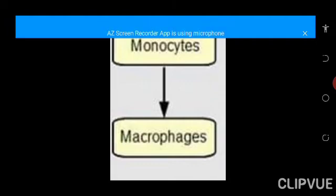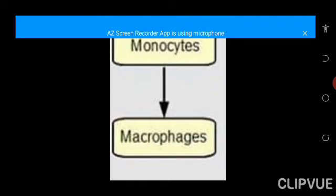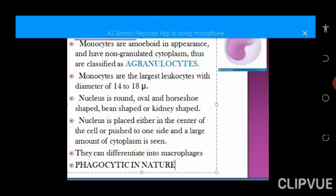Monocytes do not stay for long in the blood. After a while, they move into the tissue and become what is called the macrophage system. So anytime you hear the word macrophages, always remember they are monocytes that have migrated from the blood into the tissue — that is why we call them the tissue macrophage system. In the blood they can only stay for about two to five days, after which they either are removed or move into the tissue.